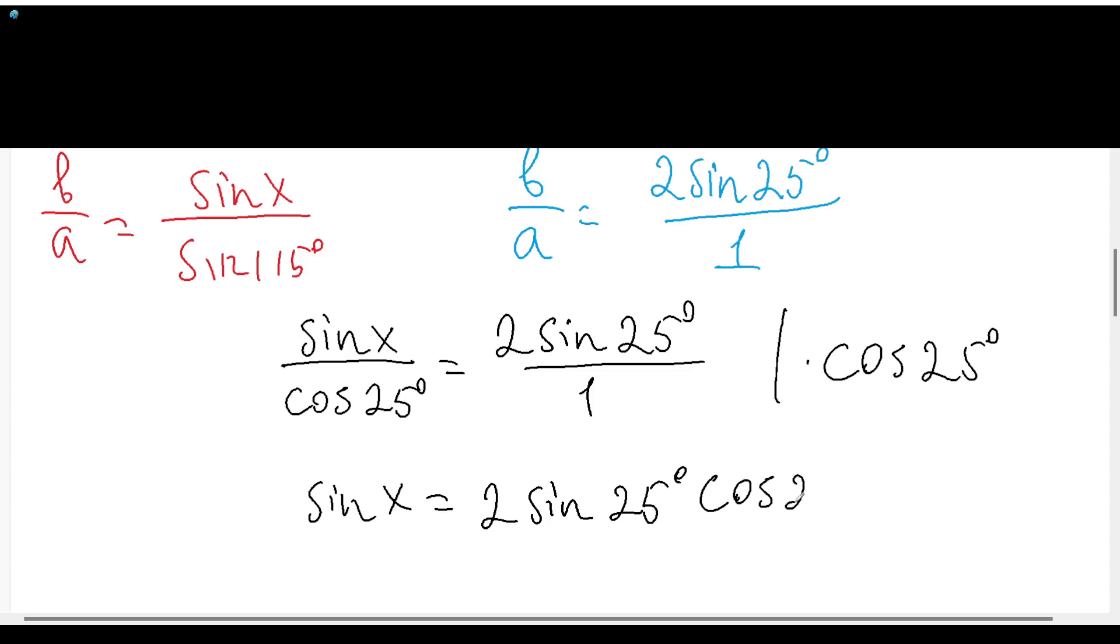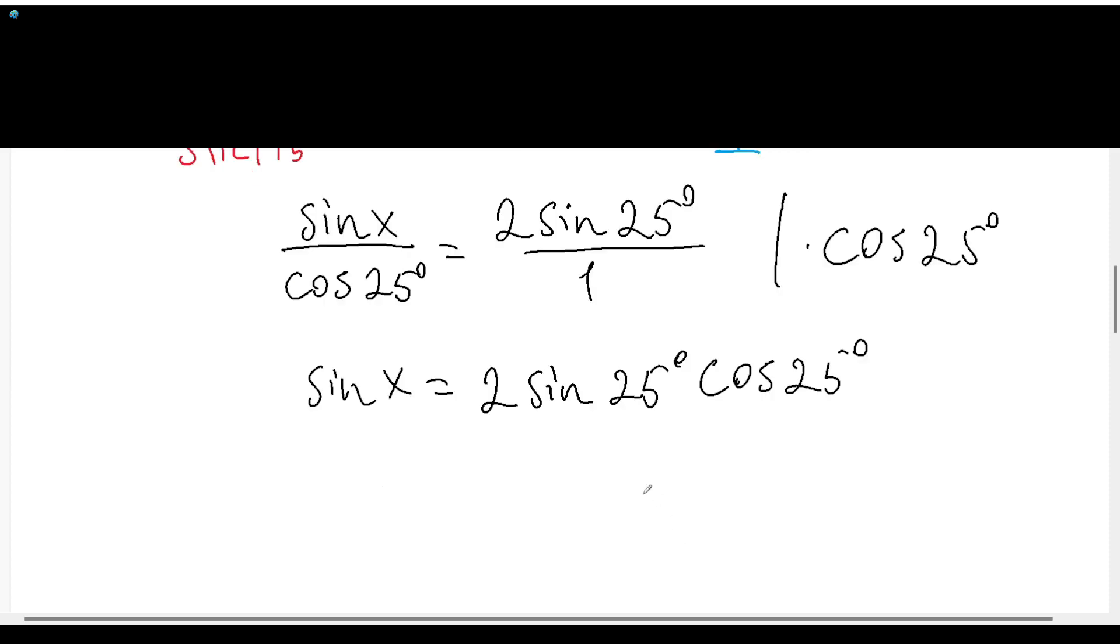And it's obvious that this will give us sin(50°). So sin(X) will be equal to sin(50°), and X here will be equal to 50 degrees. This was the first solution, but the second solution will be here.